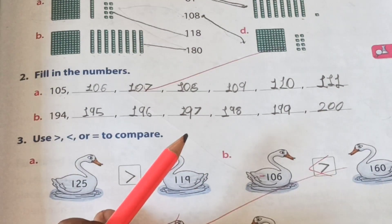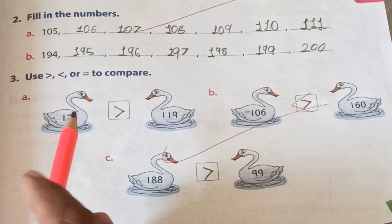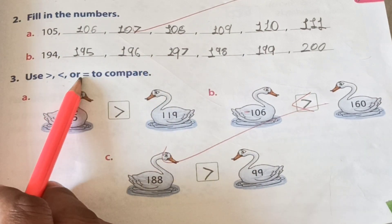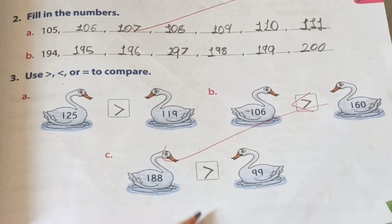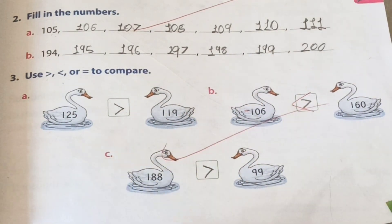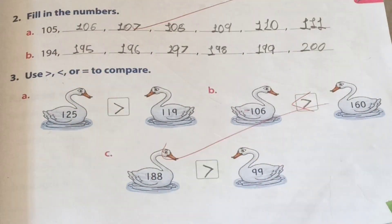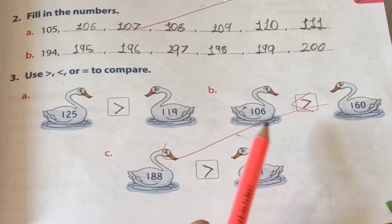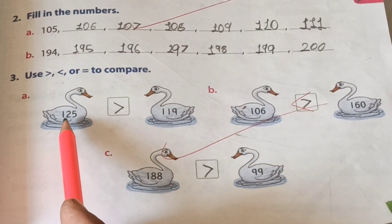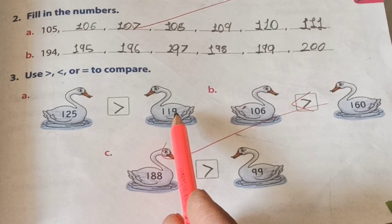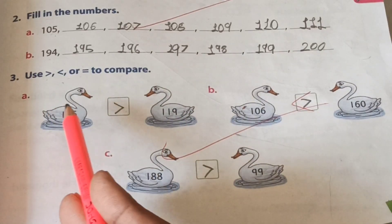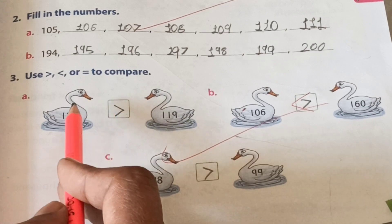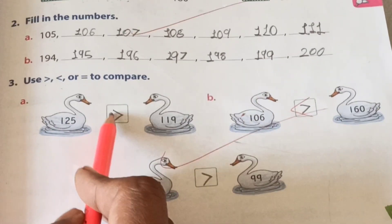Question number third: Use greater than, less than, or is equal to to compare. This question is for comparing. See, here we can see few swans, you can say ducks. See a number on their stomach. A number sum: one hundred twenty-five and one hundred nineteen. Which is the bigger number? One hundred twenty-five. So we use here: one hundred twenty-five greater than one hundred nineteen. This sign shows us this number is bigger.